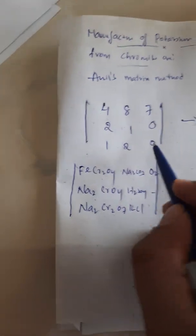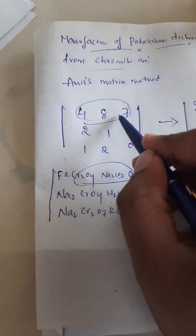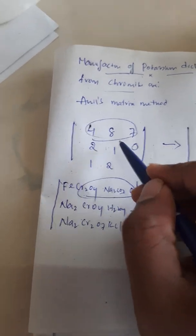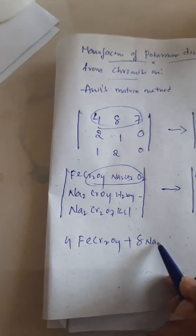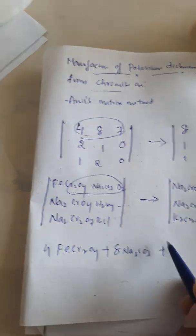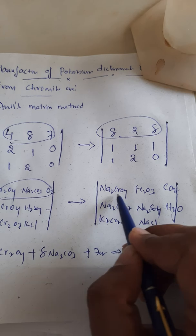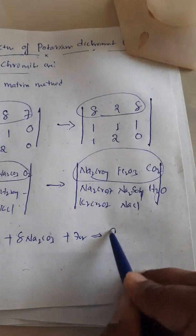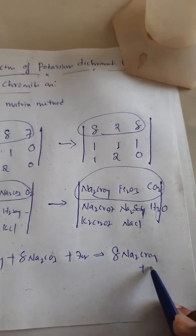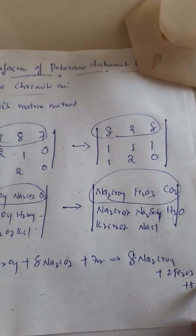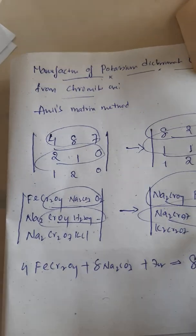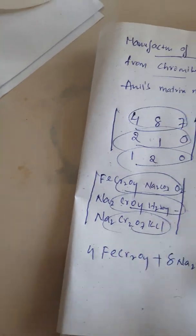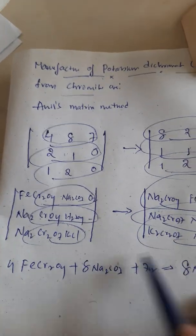Now multiply the first row of the compound matrix with the first row of the number matrix: 4 FeCr₂O₄ + 8 Na₂CO₃ + 7 O₂ gives the products. Then multiply the second number matrix with the second compound matrix to get 8 Na₂CrO₄ + 2 Fe₂O₃ + 8 CO₂. In similar manner, multiply the second and third rows with their respective compound matrices to get the second and third equations.